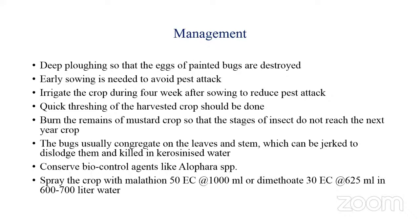For management, go for deep plowing to expose eggs. Do early sowing to avoid pest attack. Provide proper irrigation during the fourth week after sowing. Go for quick threshing. Burn the remains of the mustard crop so that pest stages are not carried over to the next season. Bugs congregating on leaves and stem can be jerked to dislodge and killed in kerosene-mixed water. Conserve biocontrol agent Alophora species. Spray malathion or fenvalerate.